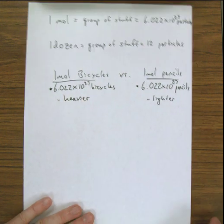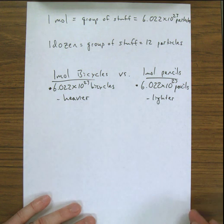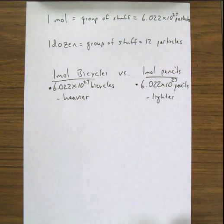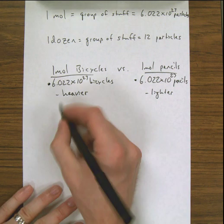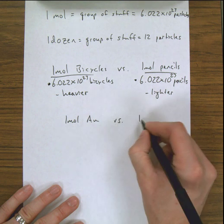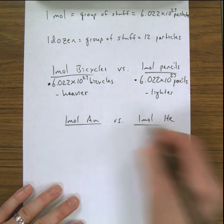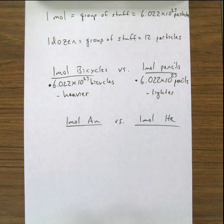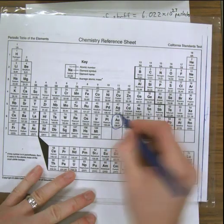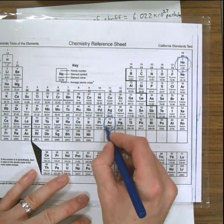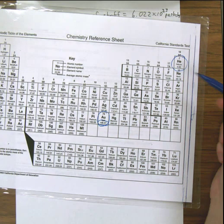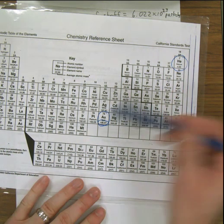So we have to know the individual weight of a bicycle and a pencil to make a distinguishing remark about how heavy one mole of bicycles is versus one mole of pencils. When comparing elements — say one mole of gold versus one mole of helium — they're both 6.022 times 10 to the 23rd things, but that information comes from the periodic table. Gold has a mass of 196.97 atomic mass units, and helium is 4, so the gold is going to be heavier.